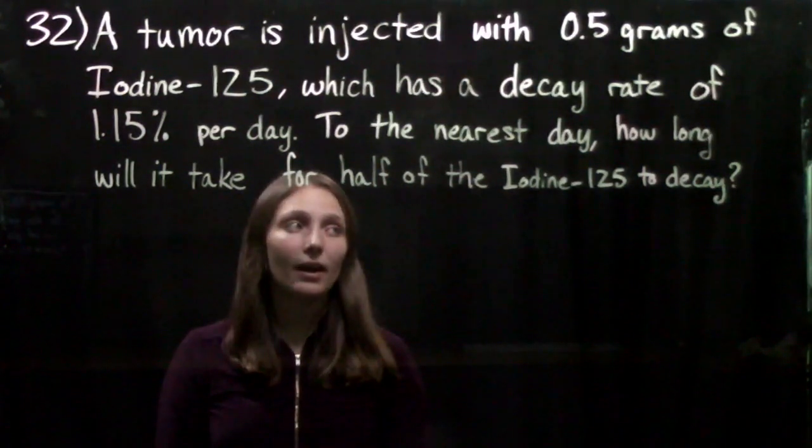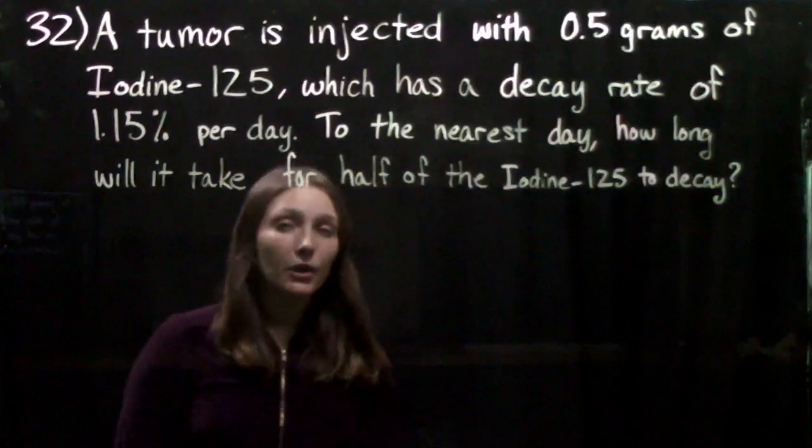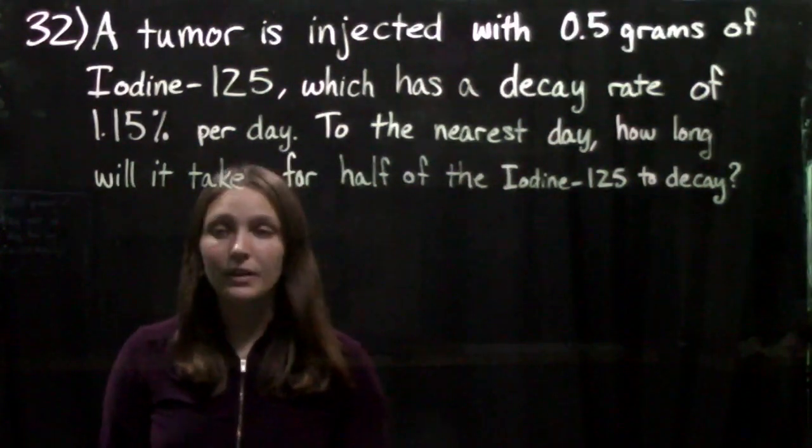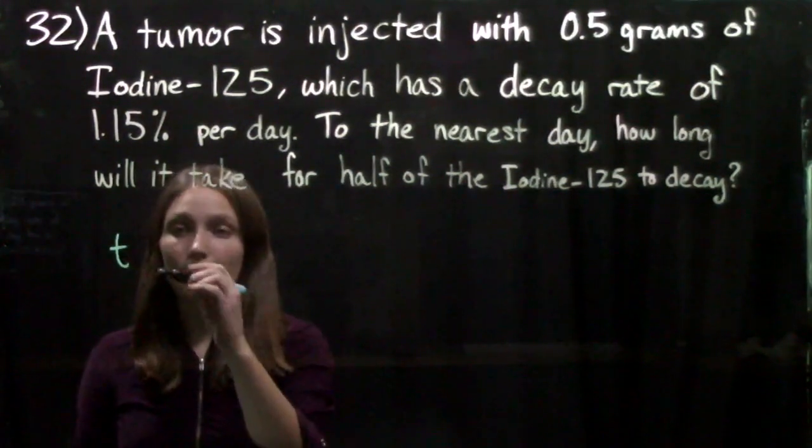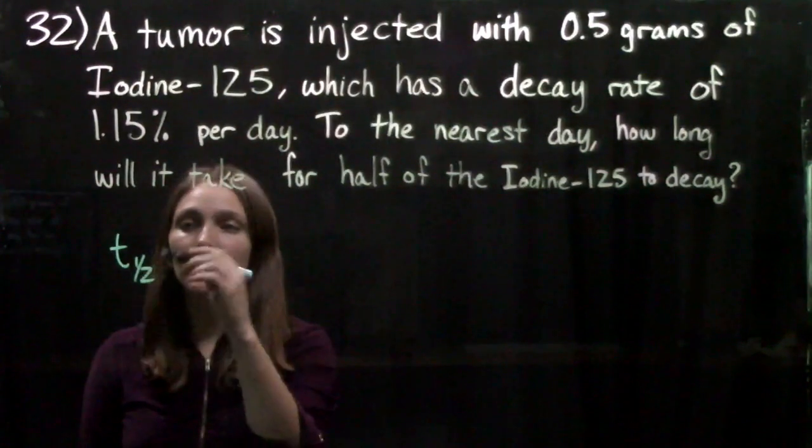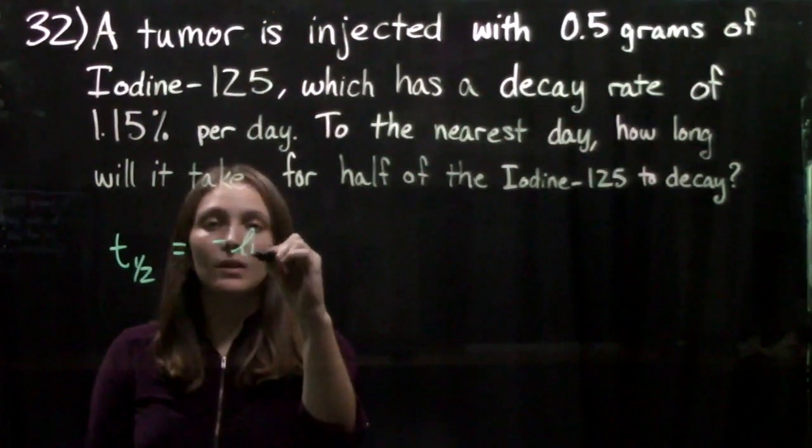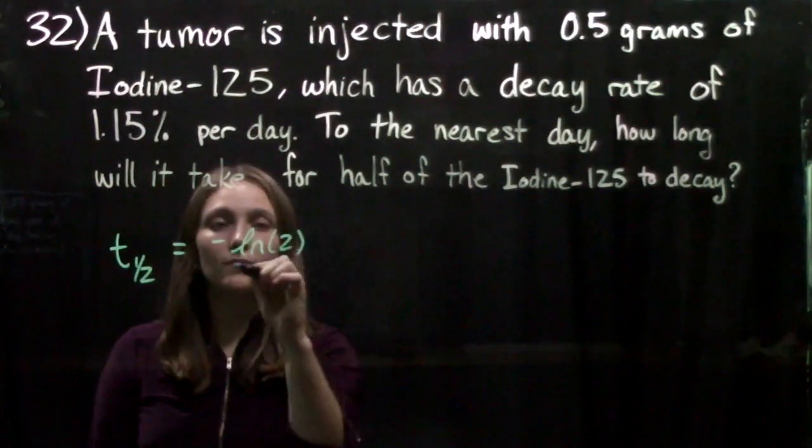Now if you look in your book on page 403, you get an equation for what's called the half-life. So we have t half equals negative natural log of 2 divided by k, where k is going to be our decay rate.